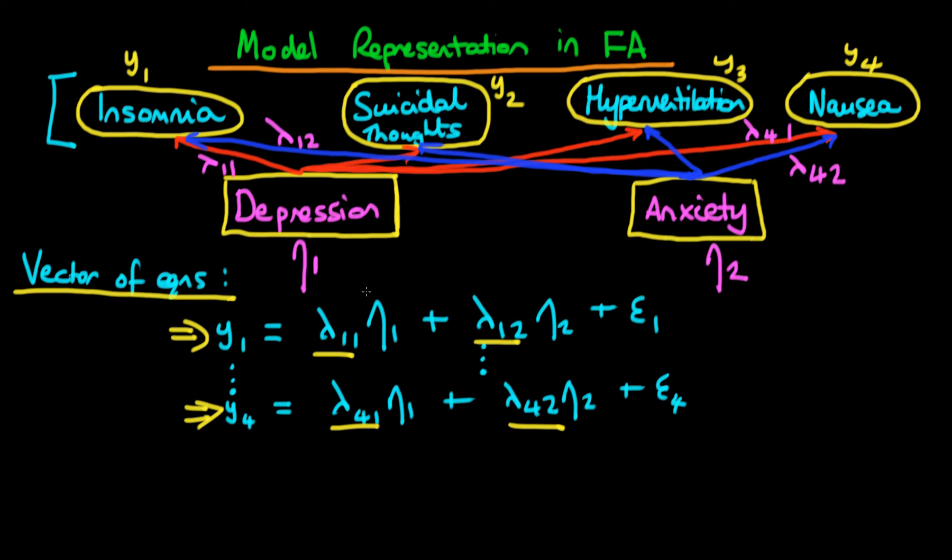The things that differ between individuals are the actual values, the actual scores of these hidden factors for different individuals. So in this case eta 1 and eta 2.